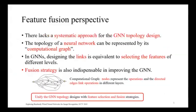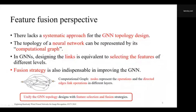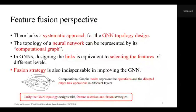When designing the GNN topology, there lacks a systematic approach. In general, the topology of a neural network can be represented by its computational graph. In this graph, nodes represent operations and directed edges link operations in different layers. While in GNNs, designing the links is equivalent to selecting features at different levels. Compared with general neural networks which focus on designing the links, in GNNs the fusion strategy is designed to make better utilization of the selected features, which is indispensable in improving GNN model capacity. Therefore, different selection and fusion operations result in different GNN topologies, and we can unify the topology designs in GNNs with feature selection and fusion operations.